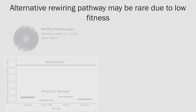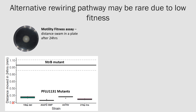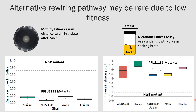We also find that the alternative rewiring pathway may be rare due to low fitness. In a motility fitness graph measuring distance moved in millimetres relative to the NTRB mutant, the PFLU1131 mutants move roughly a third the distance of the NTRB mutant, suggesting they may be rare simply because they're not as strong swimmers. We also looked at metabolic fitness in shaking LB broth where motility provides no advantage. Despite the NTRB mutant paying a big metabolic fitness penalty due to overexpressing nitrogen genes, the PFLU1131 mutants do not pay a significant pleiotropic fitness cost.